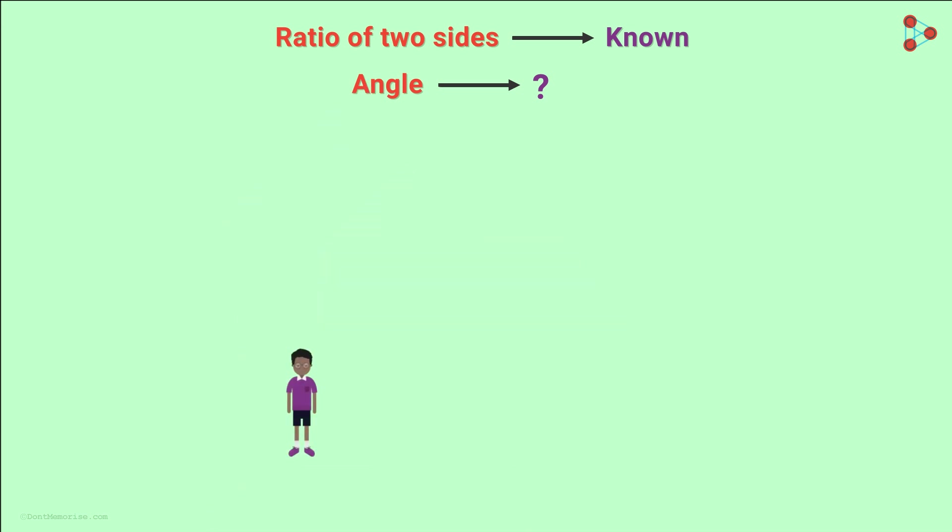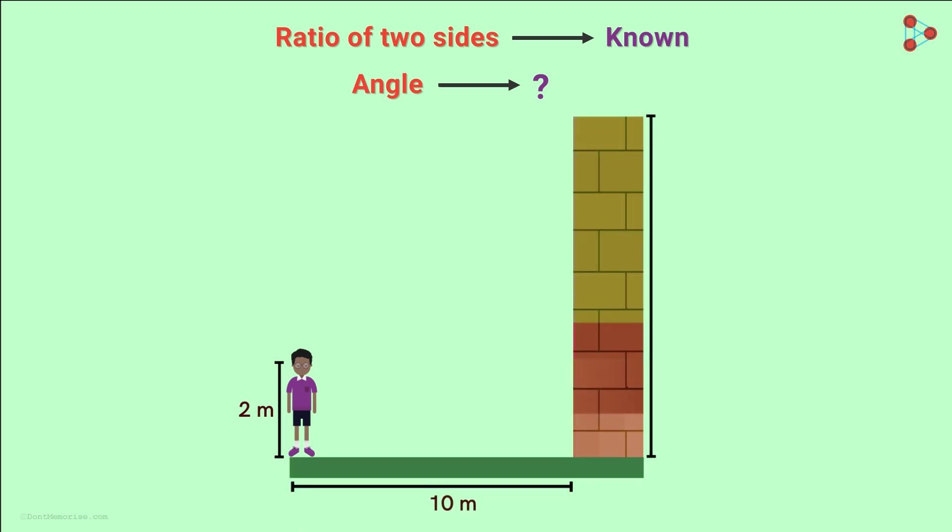Suppose our friend Zeki, who is 2 meters tall, is standing at a distance of 10 meters from a wall which is 12 meters tall. What would be the angle of elevation from Zeki to the top of the wall? Since Zeki's height is 2 meters and the height of the wall is 12 meters, this length will be 10 meters.